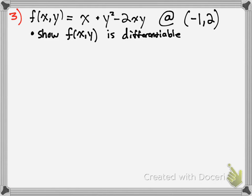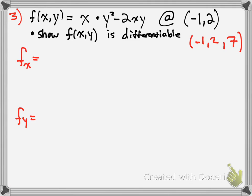Now we go over differentiability. The directions say: show that f(x, y) is differentiable. To show that a function is differentiable, you simply take the partial derivative with respect to x and with respect to y — if you get a number, it's differentiable. First, let's find the third coordinate: plug in negative 1 and 2, and you should get 7.